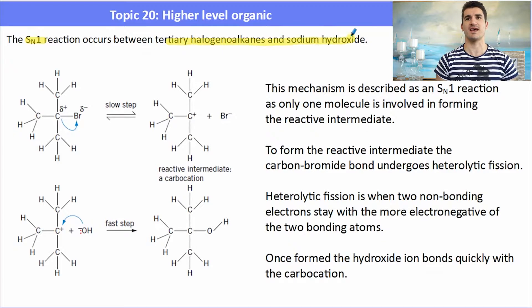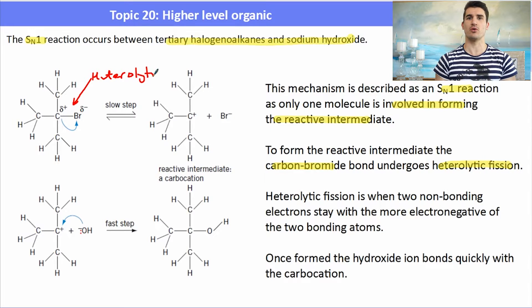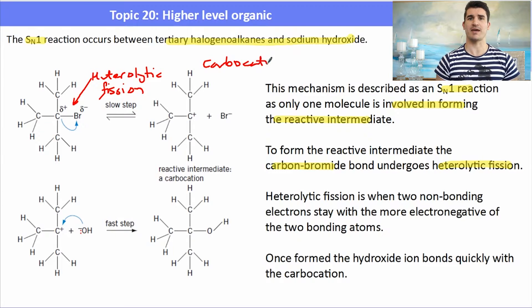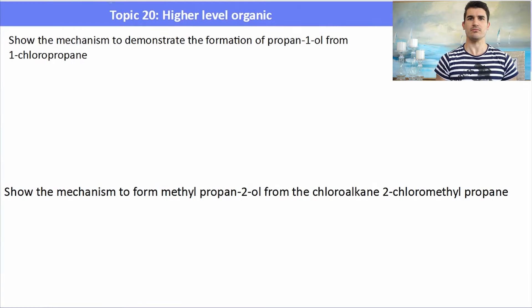The SN1 reaction is a reaction between a tertiary halogeno alkane and sodium hydroxide. The mechanism is described as SN1 — substitution, nucleophilic, one reactant — because only one reactant is involved in the first step. The first step is where the electrons in the carbon-to-bromine bond move towards the bromine in heterolytic fission, breaking the bond so the bromine takes both electrons. This forms a carbocation — a carbon with a positive charge — which is relatively stable but takes time to produce. Once that carbocation is formed, the nucleophile (hydroxide) can come along very quickly and interact with it.